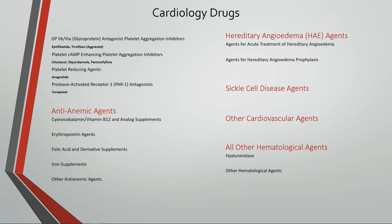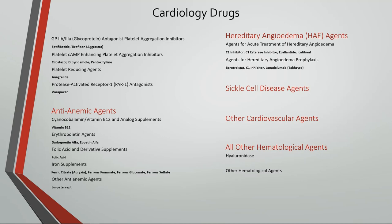Under anti-anemic agents, we have cyanocobalamin or vitamin B12 and analog supplements, erythropoietin agents, folic acid and derivative supplements, iron supplements, and other anti-anemic agents. Under hereditary angioedema agents, we have agents for acute treatment and agents for hereditary angioedema prophylaxis. There are also sickle cell disease agents, other cardiovascular agents, and all other hematological agents including hyaluronidase.